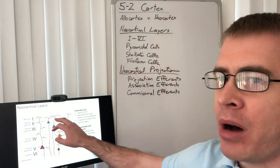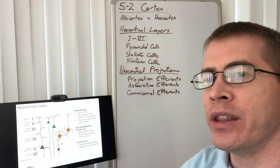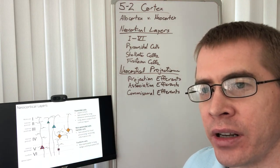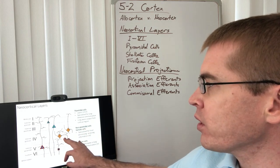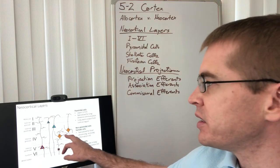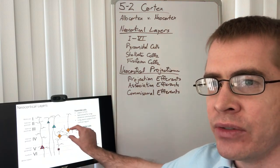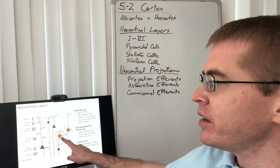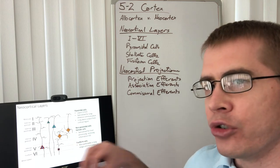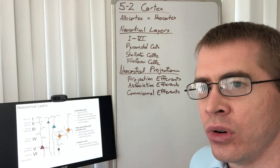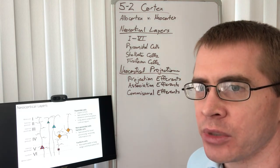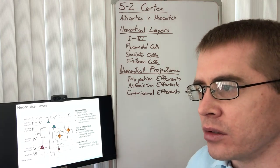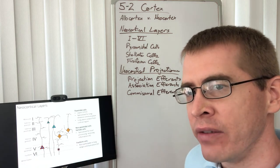Depending upon how long the axon has to be — how far away the information is going — the soma will be larger or smaller. Moving to layer four, we have non-pyramidal cells called stellate cells, which specialize in receiving and processing information within that one cortical layer. These stellate cells receive information coming into layer four from possibly far away. And then layer six has fusiform cells, which are for long-distance processing, sending information out of the cortex.